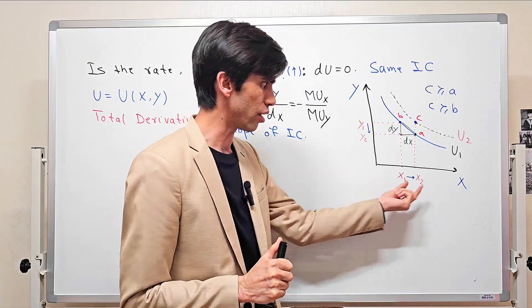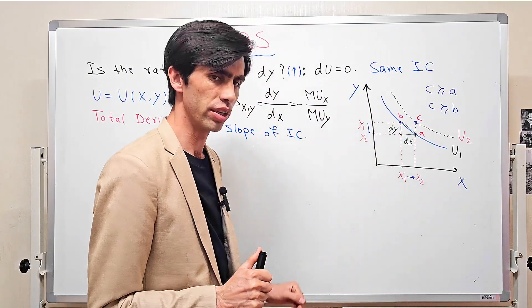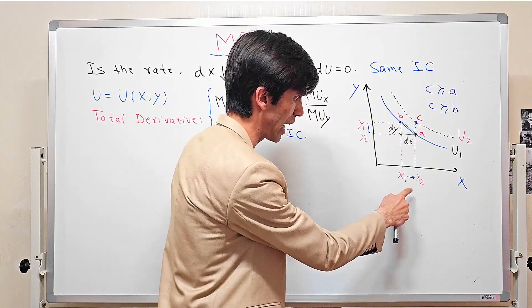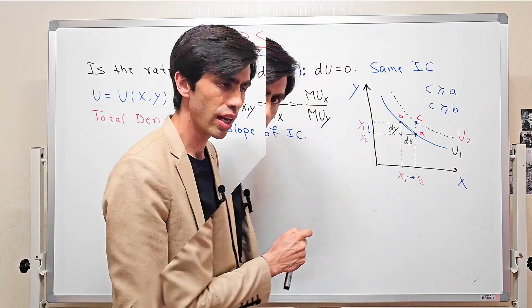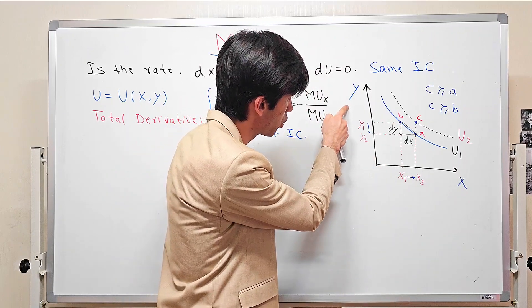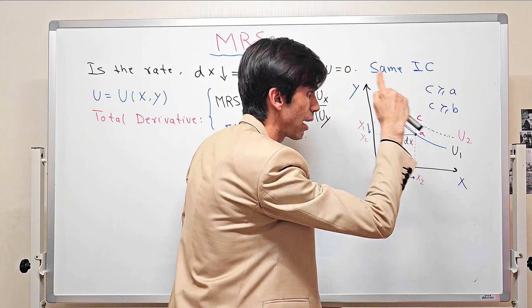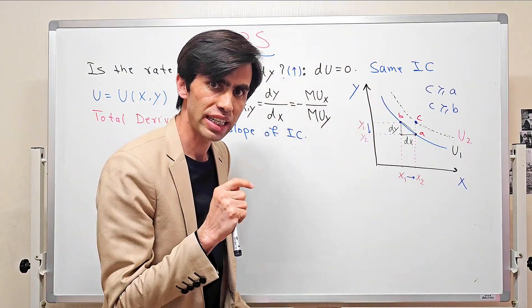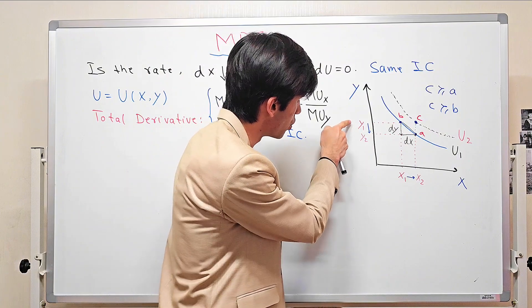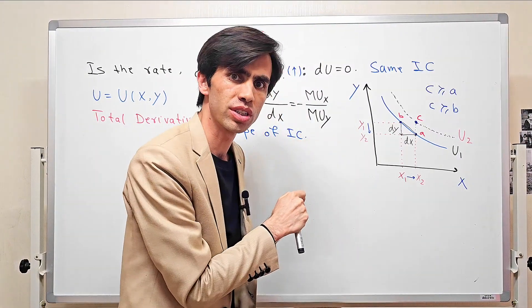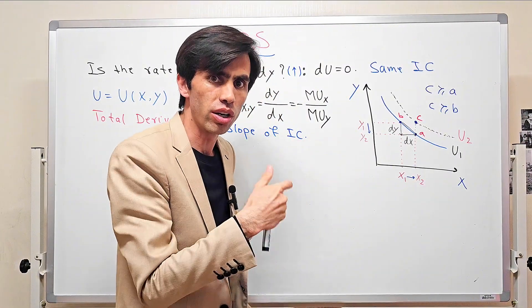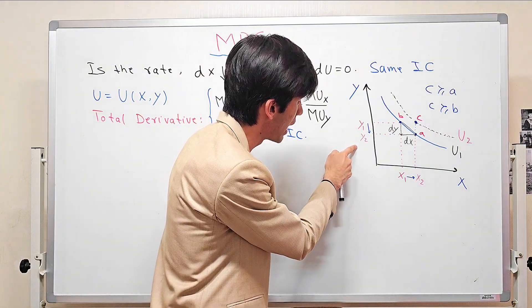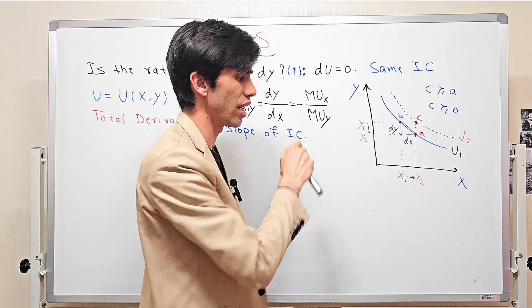Suppose we have two goods in your consumption bundle, which are x and y. If we are going to increase the consumption of x from x1 to x2, how much should we reduce the consumption of y in order to stay on the same indifference curve? But the question is: why do we need to decrease y in order to stay on the same indifference curve?